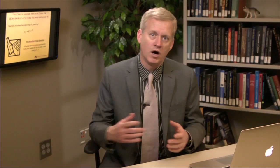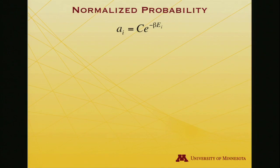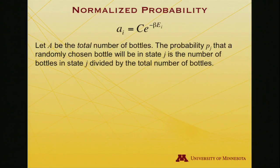So normalized meaning that all the probabilities together add up to 1. Let's continue to work with this equation and see what we can do with it to transform it to a probability. To begin, let's take another value, capital A, and I'll define capital A to be the total number of bottles in the water cooler.